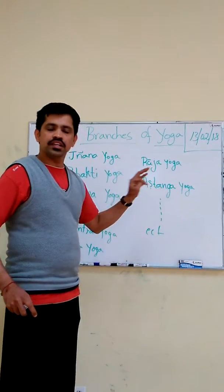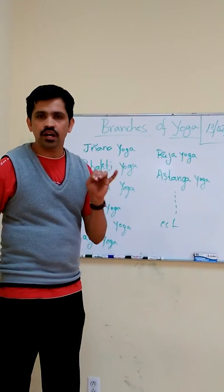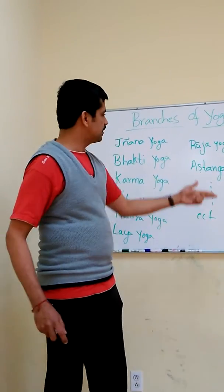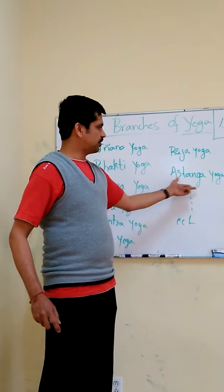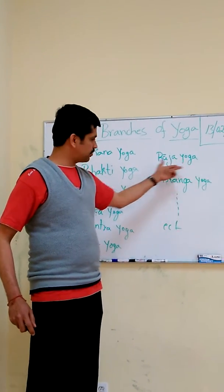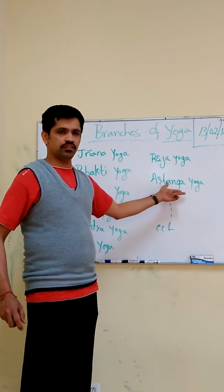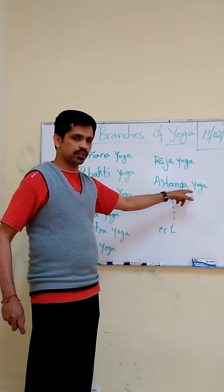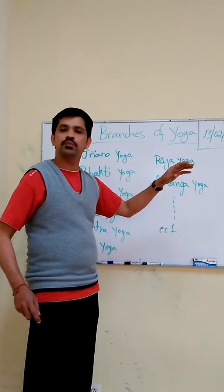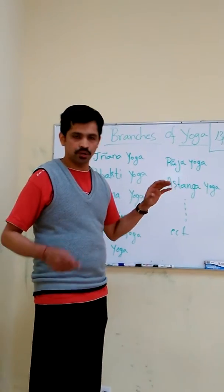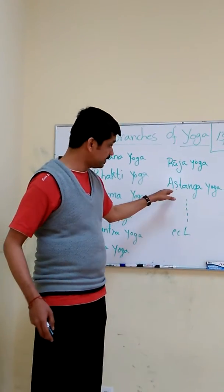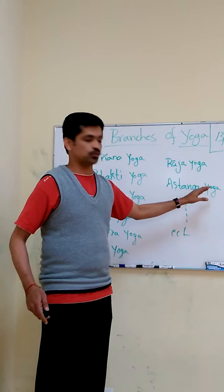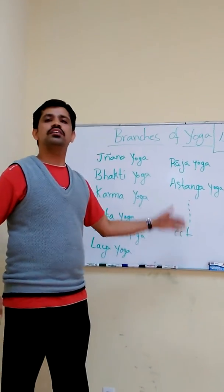Ashtanga Yoga is having eight steps: Yama, Niyama, Asana, Pranayama, Pratyahara, Dharana, Dhyana, Samadhi. These eight steps of Yoga practice, as mentioned by Maharshi Patanjali, is Ashtanga Yoga.